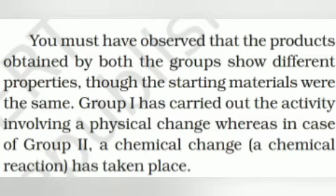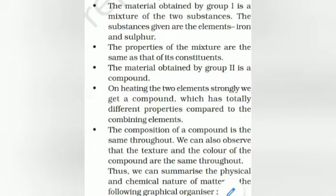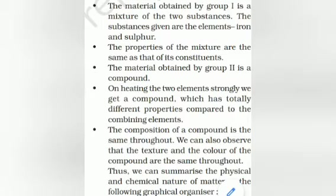The products obtained by both groups showed different properties, though the starting materials were the same — iron and sulfur. Group one carried out only a physical change, whereas group two carried out a chemical change — a chemical reaction took place. The material obtained by group one is a mixture and retains the properties of its constituents. The material obtained by group two is a compound, with totally different properties from the combining elements.